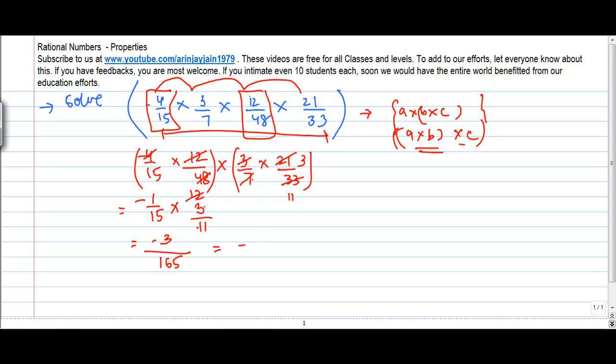Or otherwise, 3 goes into 15 five times. In fact, this will become much easier. So this becomes -1/5 times 1/11, which is -1/55.